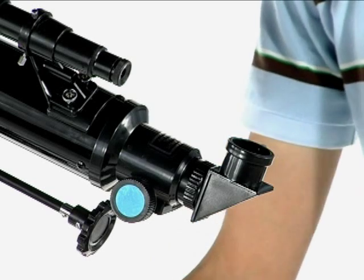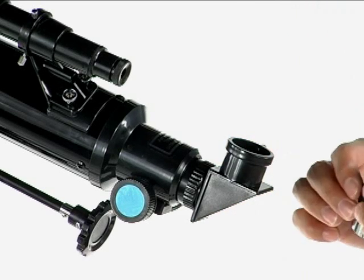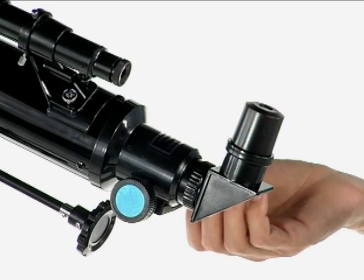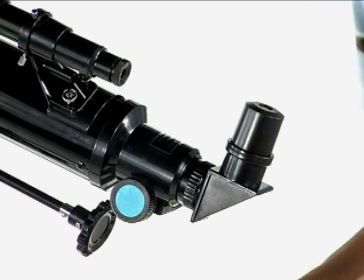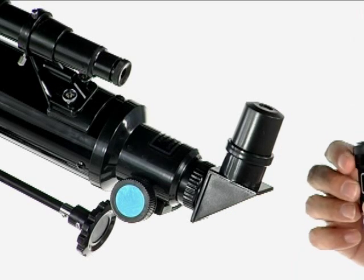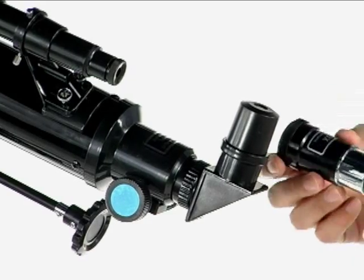And now you have your eyepieces, which is your 20 millimeter, which will slide in on the top here, just like that. Or, if you want higher magnification, it also comes with a three-barlow lens, which multiplies your magnification times three.